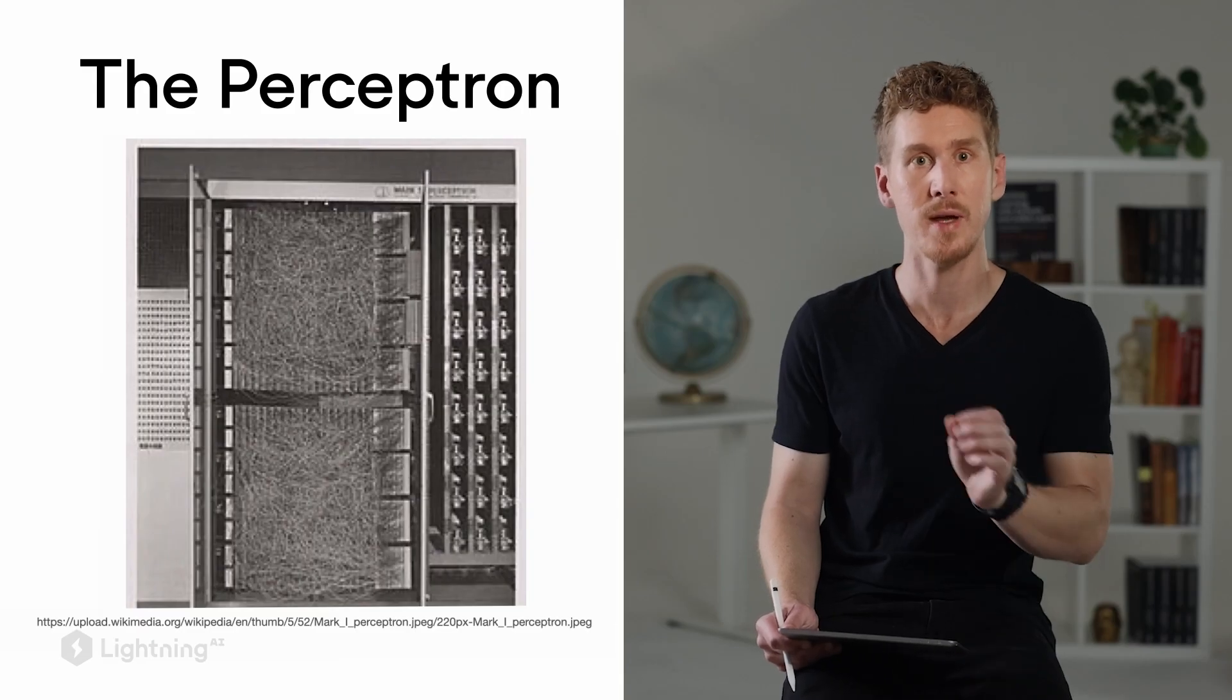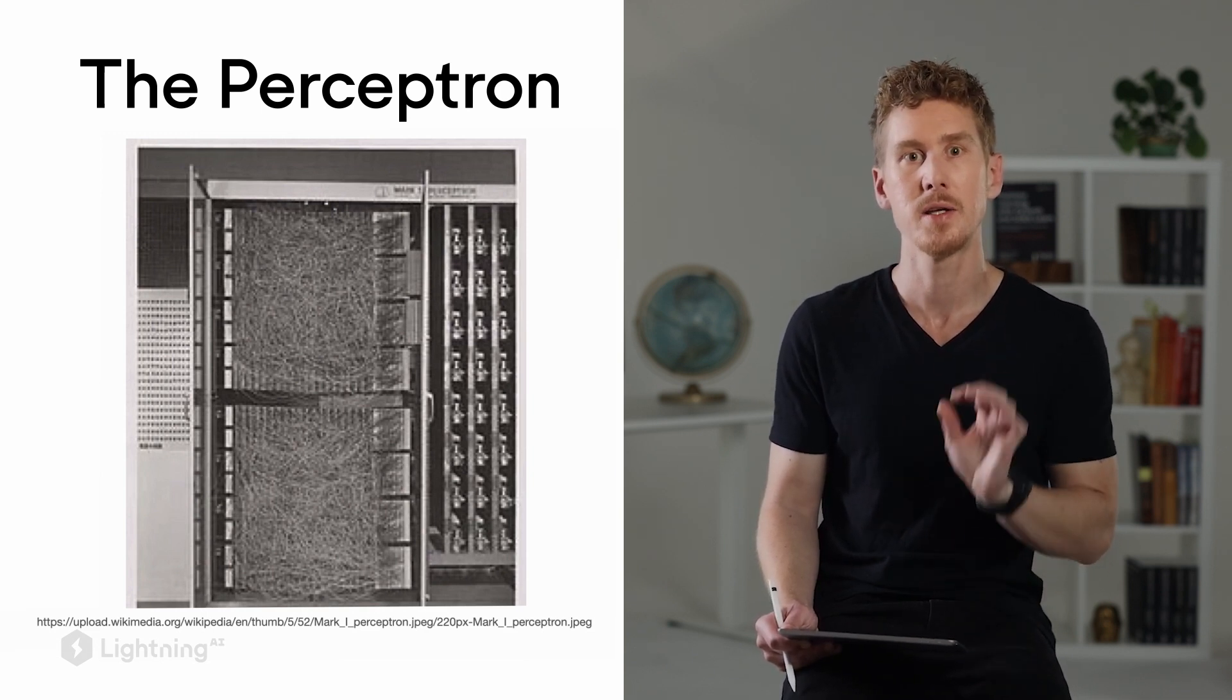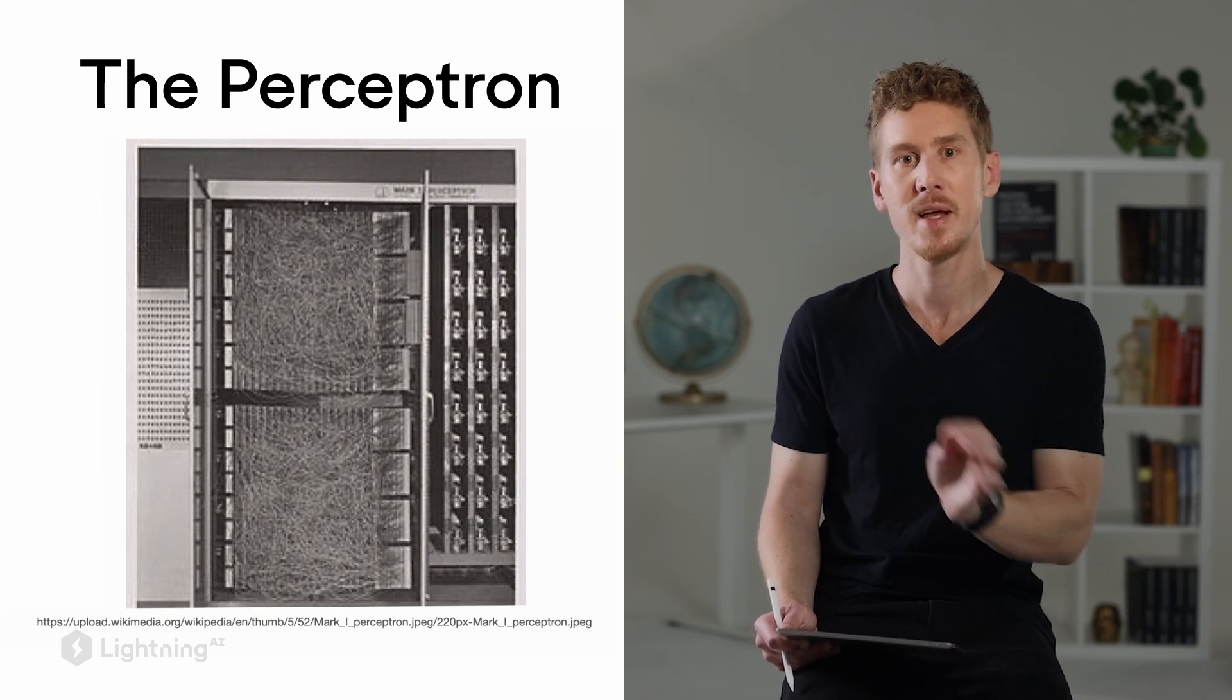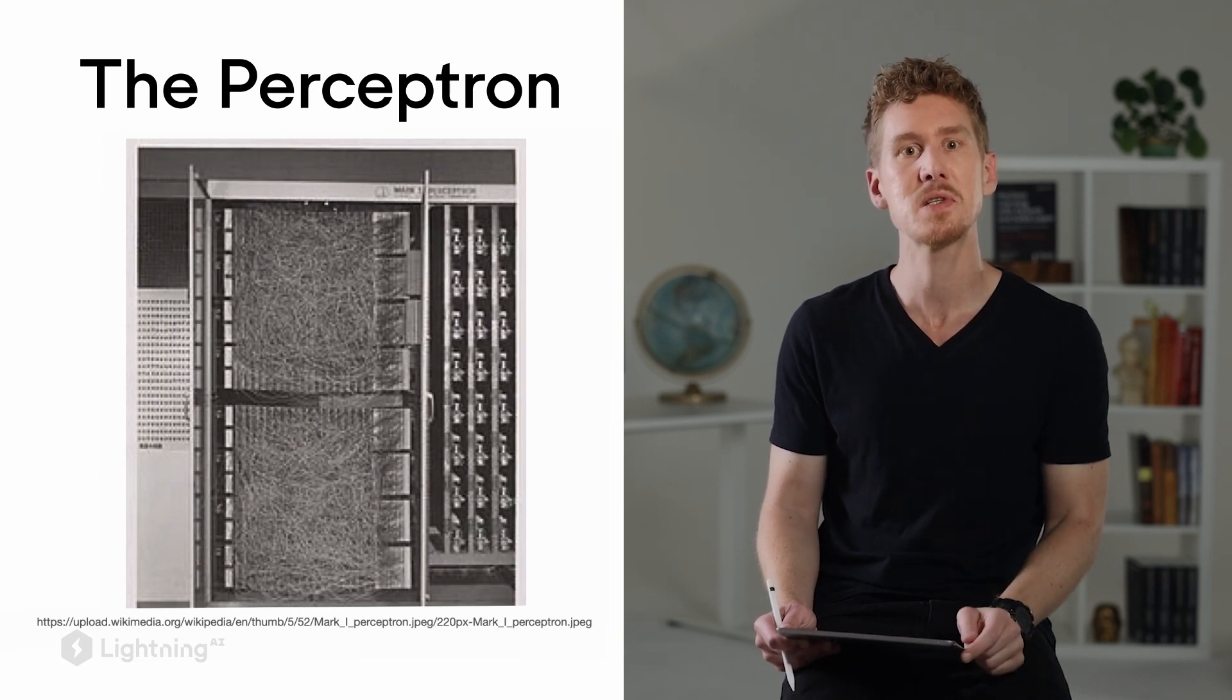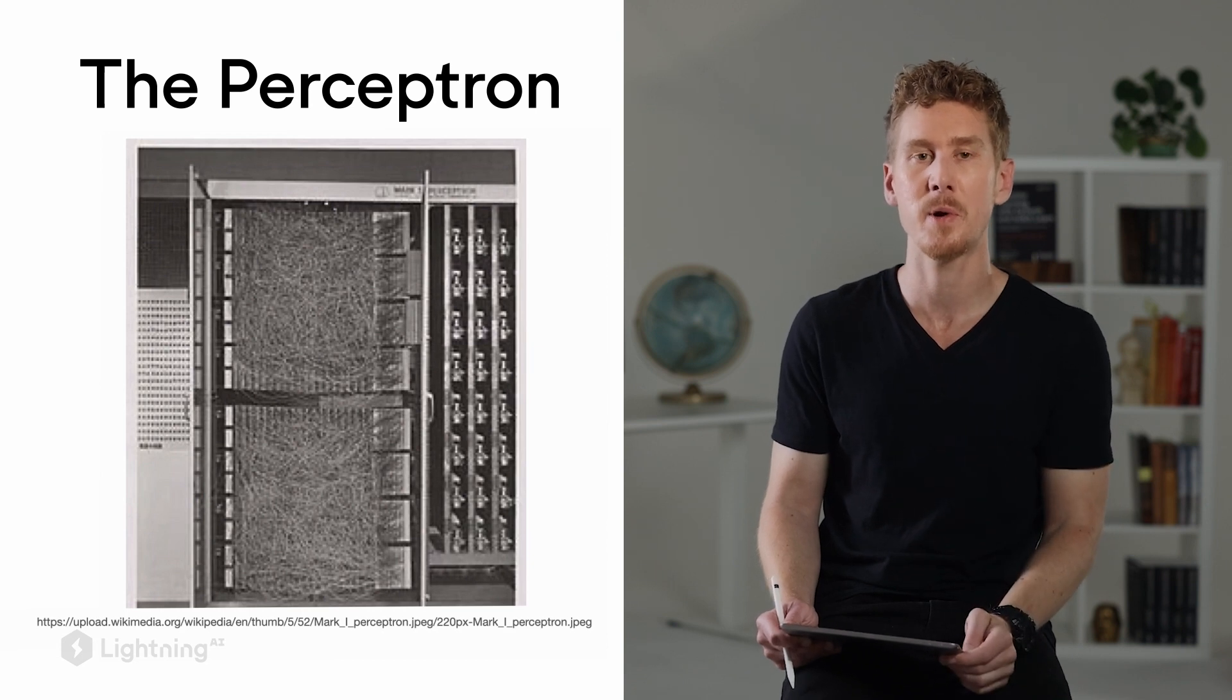So actually when this perceptron was invented more than 70 years ago, it was first implemented in hardware. So back then it was actually a box with different wires. Of course, in this course, we will implement all of that programmatically using code, but it's just interesting to see how the perceptron came to be, how earlier systems for machine learning worked.